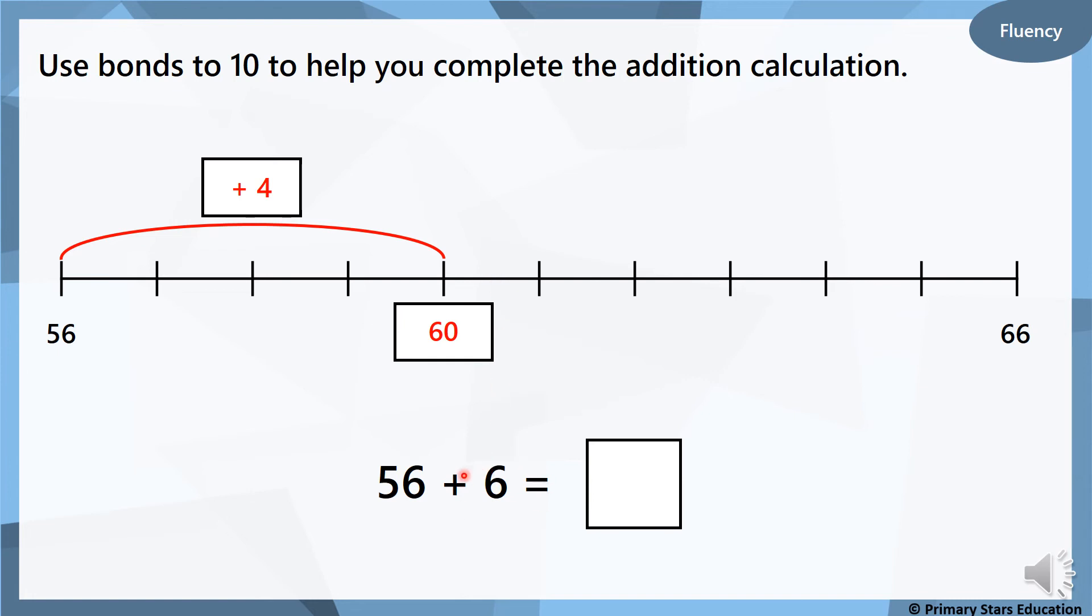Now we need to work out how many more we need to add. So 6 in your head take away 4. 5, 4, 3, 2. We've got to add 2 more. So 60 add 2 is 62. So the answer is 62. Well done if you're able to use your number bonds to help you.